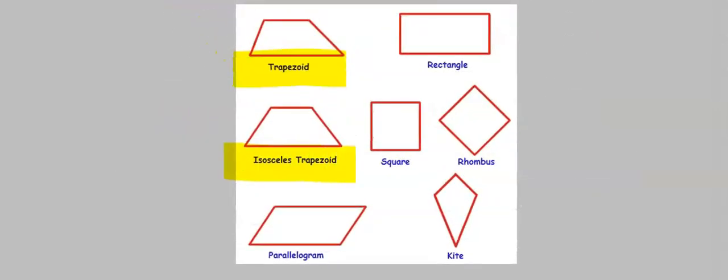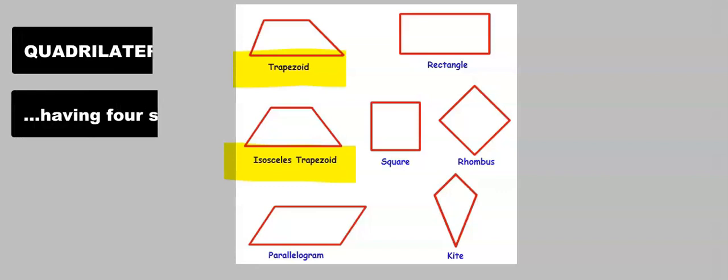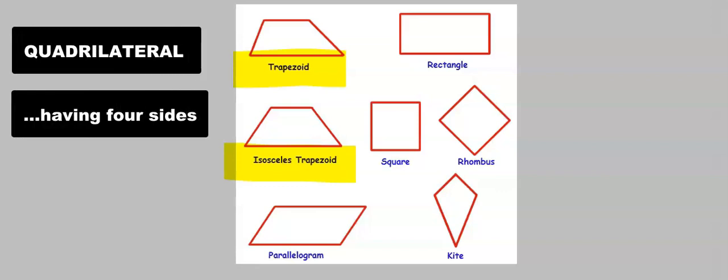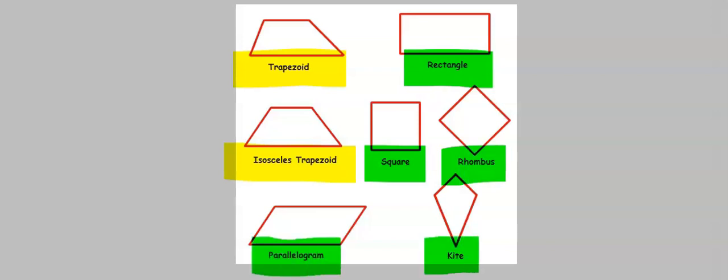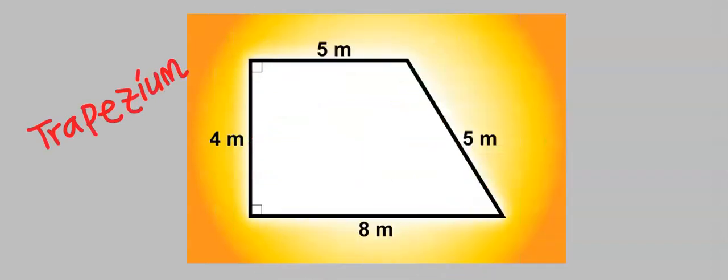A trapezium is one of the quadrilaterals with four sides. Other quadrilaterals are rectangle, square, rhombus, kite, and parallelogram. But in this video, we are only concerned with trapezium.